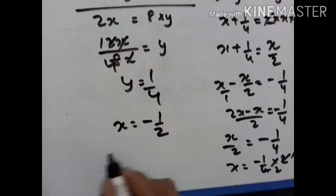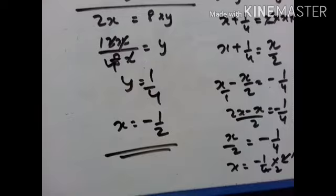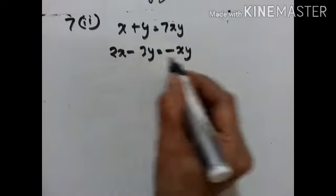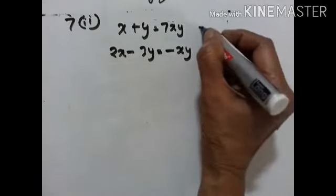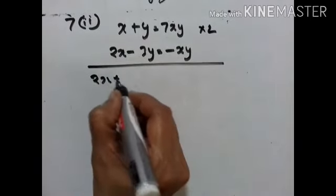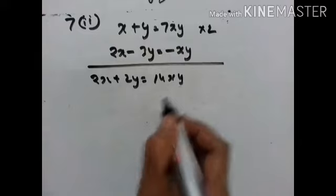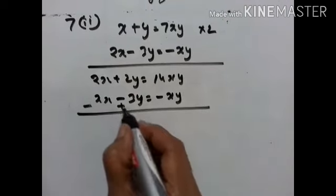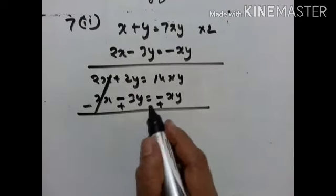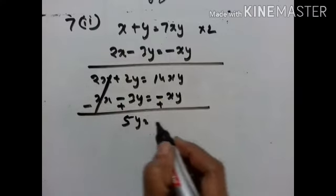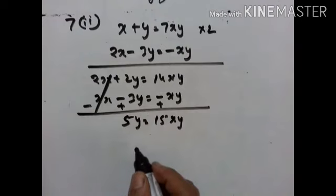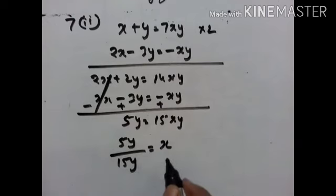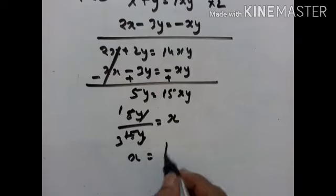So y equals 1 upon 4 and x equals minus 1 upon 2. Now the second part: x plus y equals 7xy is the first equation, 2x minus 3y equals minus xy is the second equation. Multiplying the first equation by 2 gives 2x plus 2y equals 14xy. Subtracting: 2x minus 2x cancels, 2y plus 3y equals 5y equals 15xy. Therefore 5y upon 15y equals x, so x equals 1 upon 3.